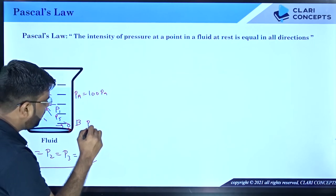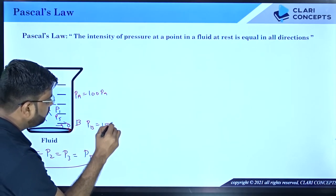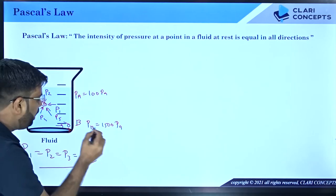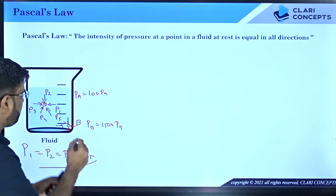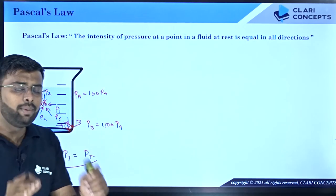And at B, the pressure can be 1500 Pascal. But the 1500 value in all directions will remain the same at point B. This doesn't mean that pressure at B and A are equal. This is where people get confused.